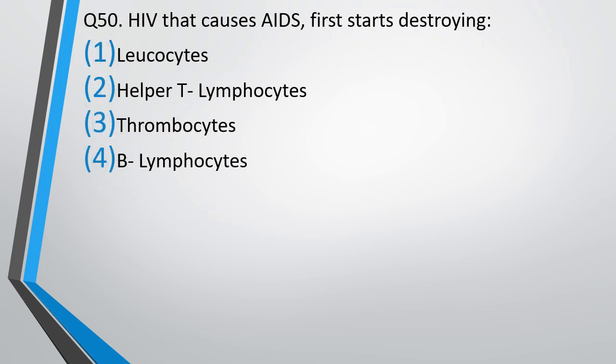Question number 50. HIV that causes AIDS first starts destroying: leukocytes, helper T cells, thrombocytes, or B lymphocytes. The correct answer is option 2, that is helper T cells.